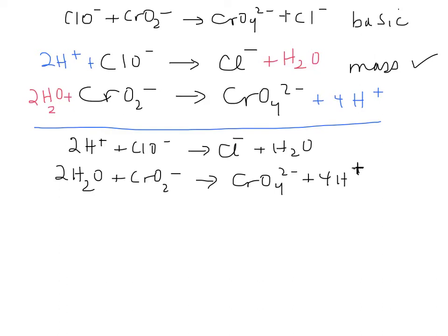Next is going to be the charge. And so you want to make the charge the same. The first half reaction is two positives and one negative, so that's an overall plus one. On the right hand side it's minus one. So you're going to add, this one's tricky, two electrons. So that it's negative one on both sides.